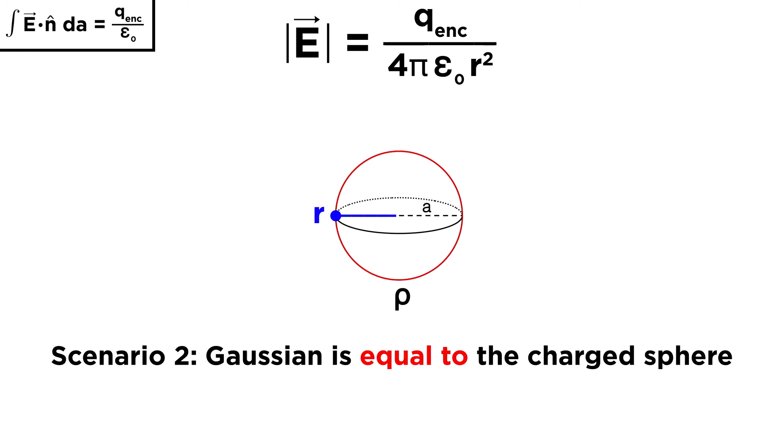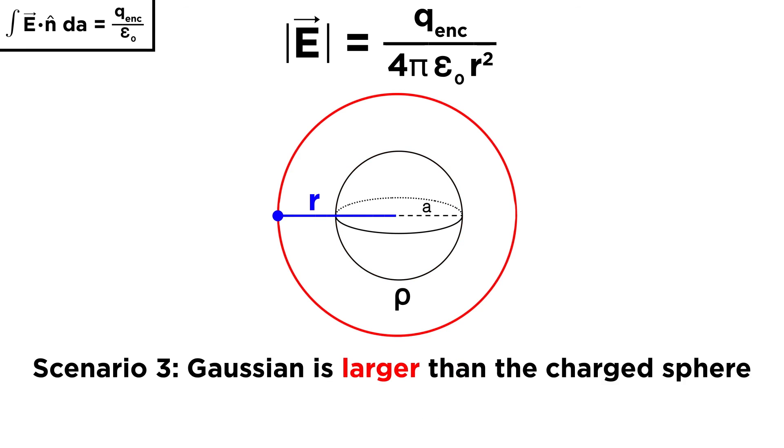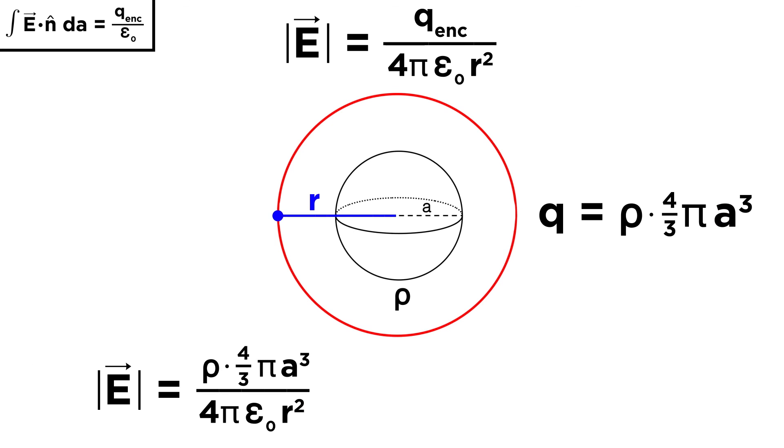For the second scenario, if we were to expand the Gaussian sphere so that it was exactly the same size as the charged sphere, such that r equals a, we would maximize the electric field as follows, by simply swapping r for a. For the third and final scenario, let's move our Gaussian sphere back outside the charged sphere, such that r is greater than a. The enclosed charge would now be a constant, but the distance r would continue to increase. Thus we have this expression for q with a in it, and that leaves us with this, which is essentially the same as the previous situation, except that the r's don't cancel, and we are left instead with a cubed on top.